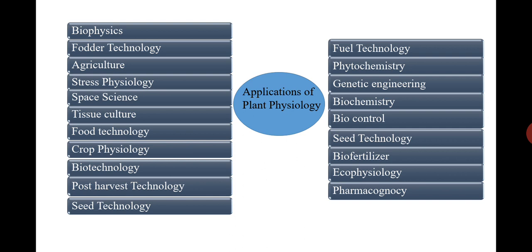In agriculture, today various types of hybrid seeds and hybrid plants are available in the market, and there is increased quality as well as yield of the crop. This is due to the application of plant physiology.